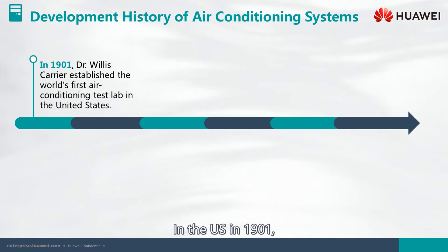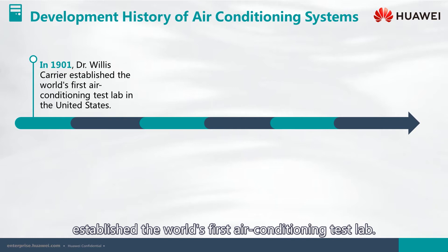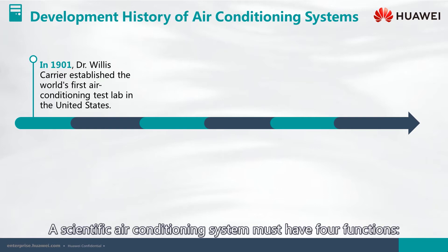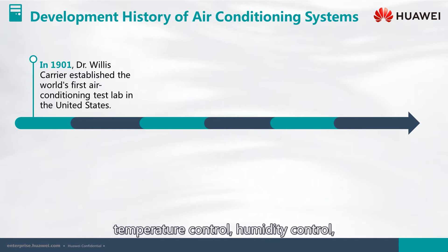In the U.S. in 1901, Dr. Willis Carrier established the world's first air conditioning test lab. He defined the invention as follows: a scientific air conditioning system must have four functions — temperature control, humidity control, air circulation and ventilation, and air purification.